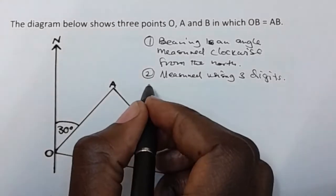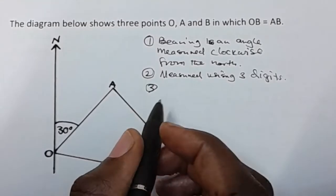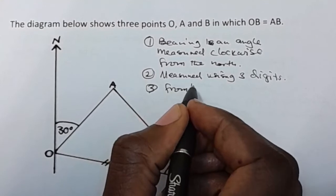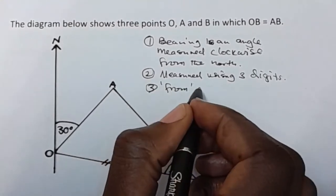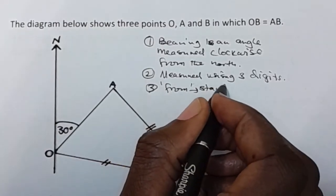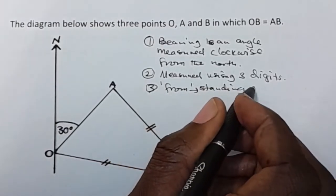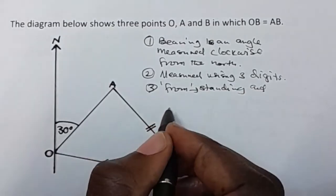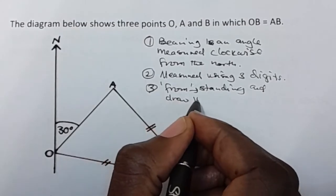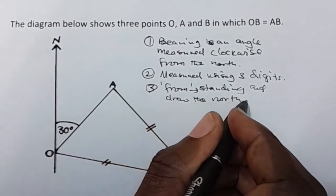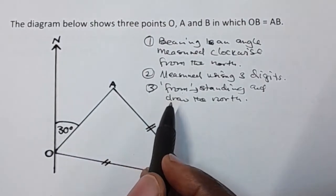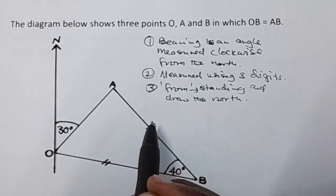And number three, you need to know that the word 'from' indicates where you are standing and where to draw the north. So the word 'from' in bearing indicates where you are standing and where you are supposed to draw the north.